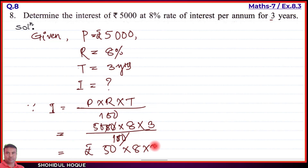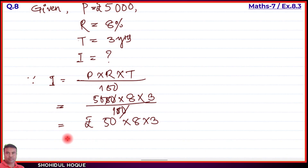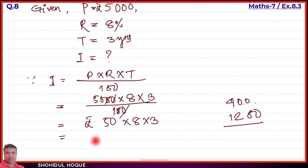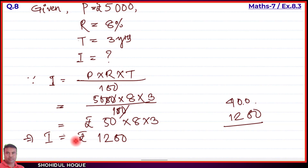Multiplying: 50 × 8 = 400, then 400 × 3 = 1,200. Therefore, I = rupees 1,200. So the interest on rupees 5,000 at 8% for 3 years is rupees 1,200. That completes question number 8.